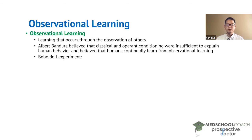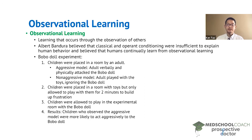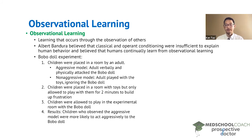Albert Bandura is most famous for his Bobo doll experiments. In this experiment he took children and placed them in a room with an adult, on opposite sides of the room. There were two situations: the adult would either act as an aggressive model or as a non-aggressive model. In the aggressive model the adult would verbally and physically attack a Bobo doll. In the non-aggressive model the adult would play with toys aside from the Bobo doll, essentially ignoring it.